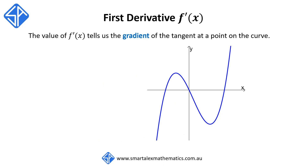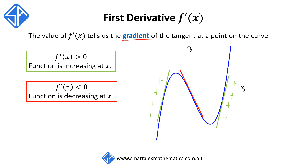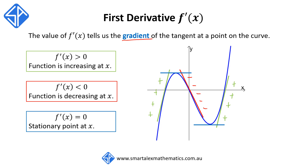The value of the first derivative f'(x) tells us the gradient of the tangent at a point on the curve. When f'(x) is greater than 0, the gradients of the tangents to the curve are positive and we have an increasing function. When f'(x) is less than 0, the gradients of the tangent to the curve are negative and so the function is decreasing. When f'(x) is equal to 0, the gradient of the tangents are 0 and we have stationary points.